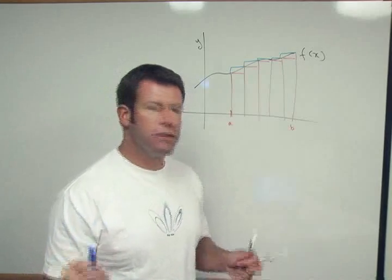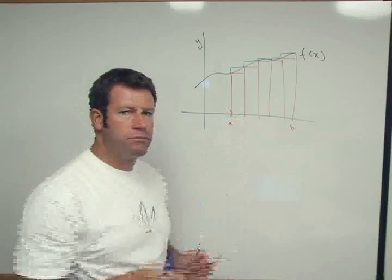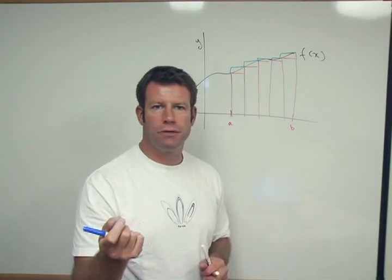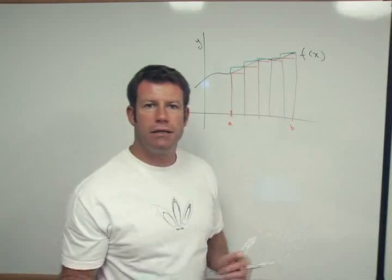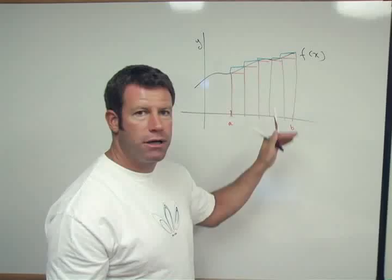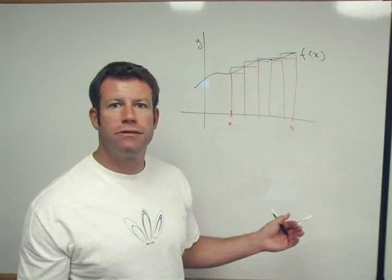Now think about this, what happens in the limit where the size of this particular strip gets smaller and smaller? When the strip is infinitesimal in width, then the blue and the red rectangles become the same size and the total sum becomes exactly that of the area, which is what an integral is.